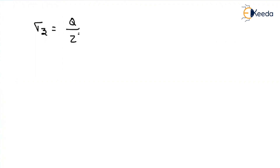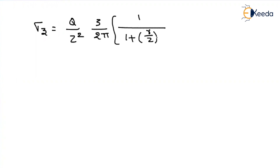Before moving on to evaluate those, let us rewrite the equation. The Boussinesq stress equation at any point: sigma z can be written as Q divided by z squared, into 3 divided by 2 pi, into 1 divided by (1 plus r divided by z) whole squared, to the power 5 by 2. This is the normal stress at a depth z from the ground surface using Boussinesq's theory.